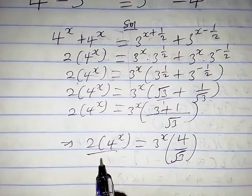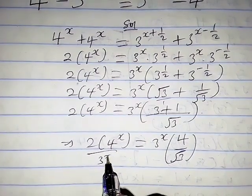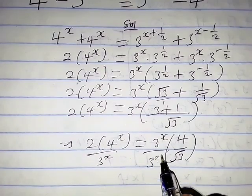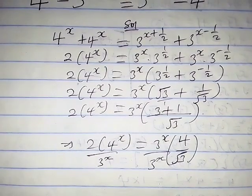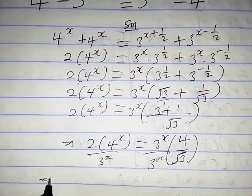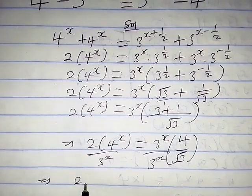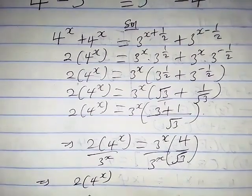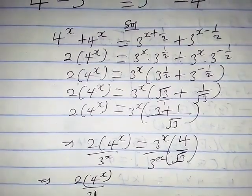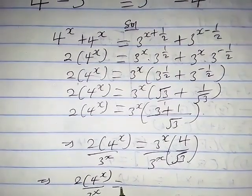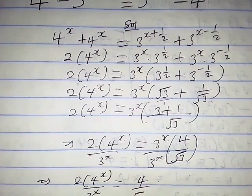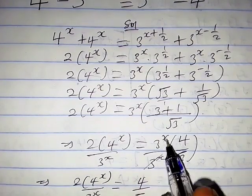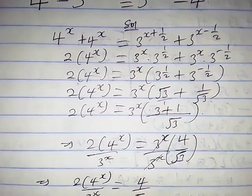Now let's divide both sides of this equation by 3 raised to the power x. We have 3^x here and 3^x here, so this implies 2 times 4 raised to the power x over 3 raised to the power x equals 4 over square root of 3, because the 3^x cancels.